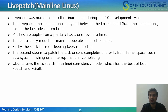The consistency model for mainline operates in steps. First, the stack traces of all sleeping tasks are checked. If the function to be patched is not found in the stack trace, the task is patched to use the new function. If this fails for a particular task, it will re-examine the stack trace periodically and attempt to patch at a later point in time. The second step is to patch the task once it completes and exits kernel space, such as a syscall finishing or an interrupt handler completing. Ubuntu uses the livepatch consistency model combining the best of both kpatch and kgraft, with no custom changes.